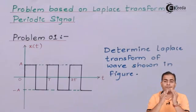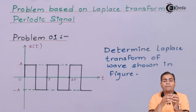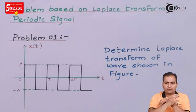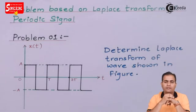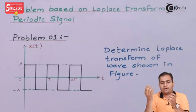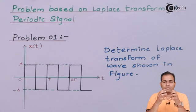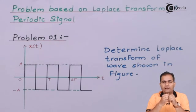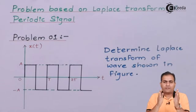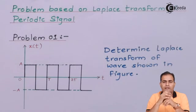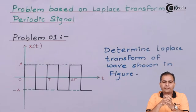The Laplace transform of the first period is also similar to the Laplace transform of the next time period. So it is not necessary to find the Laplace transform of the whole periodic signal, which extends from 0 to infinity. We only need to find the Laplace transform of the first period. This formula is from the properties of Laplace transforms for periodic signals. Now we will solve problem number 1.